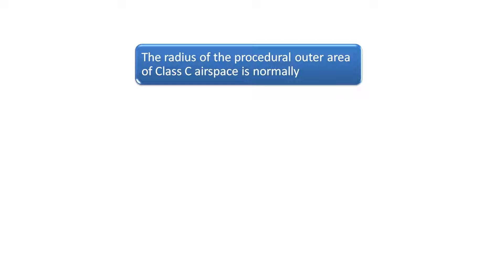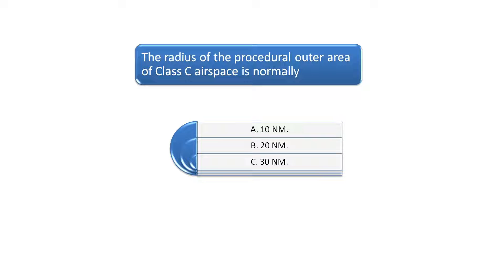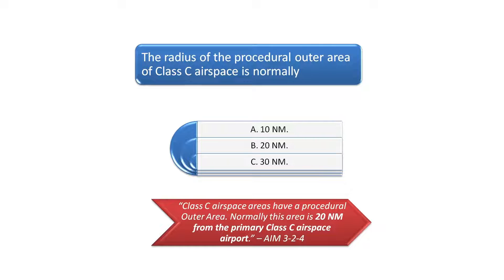Question 2 asks, the radius of the procedural outer area of Class C airspace is normally. According to Chapter 3 of the Aeronautical Information Manual, Class C airspace normally has a procedural outer area of 20 nautical miles from the primary Class C airspace airport.